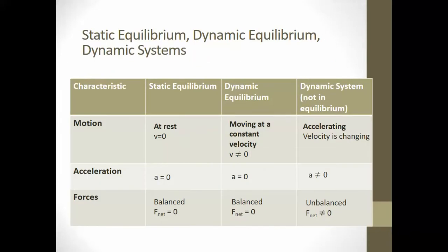We've now talked about static equilibrium, dynamic equilibrium, and dynamic systems. A chart compares the three. Static and dynamic equilibrium are similar because they both have an acceleration of zero, balanced forces, and a net force of zero. The difference is that static equilibrium is at rest, while dynamic equilibrium is moving at a constant velocity. A dynamic system has an object with a changing velocity — it will be accelerating, the net force is not zero, and the forces are not balanced.